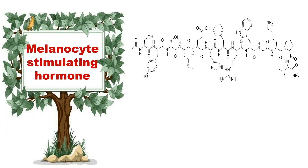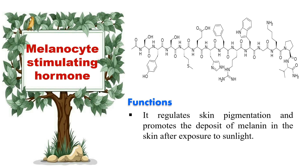Next hormone is melanocyte-stimulating hormone (MSH). There are different forms of MSH which belong to a group called melanocortins, which includes ACTH, alpha-MSH, beta-MSH, and gamma-MSH. These peptides are cleavage products of the larger peptide called POMC — proopiomelanocortin. Alpha-MSH is the important melanocortin for pigmentation. Its function is to regulate skin pigmentation and promote the deposition of melanin in the skin after exposure to sunlight.